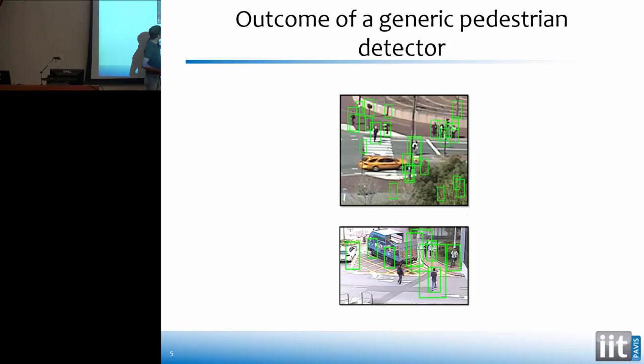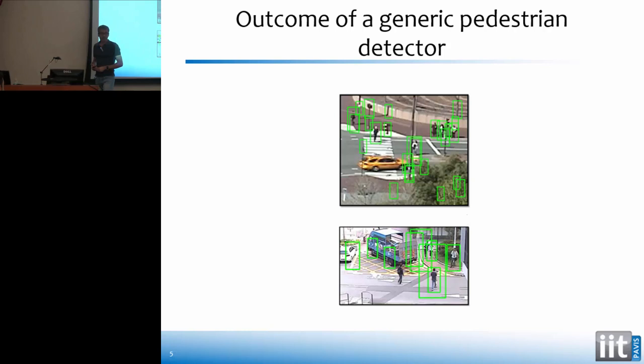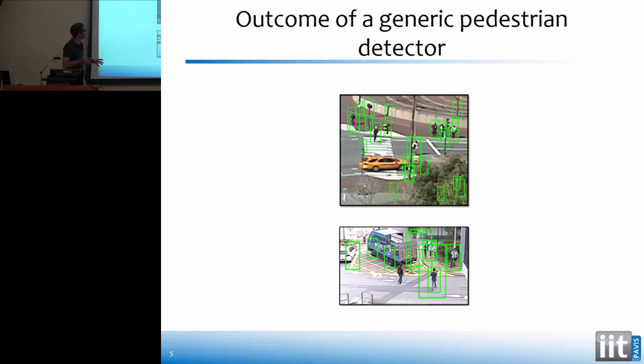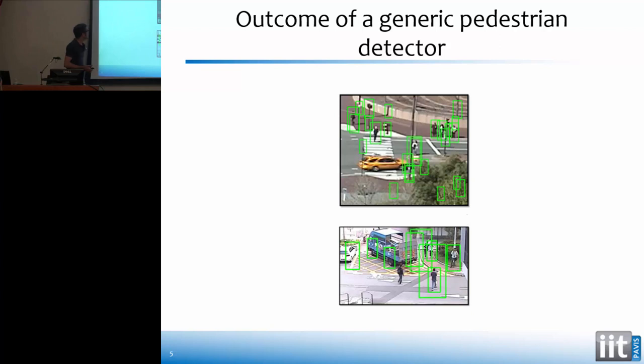This is what happens — as you can see, there are a lot of false positives. The generic detector here is the Dalal and Triggs HOG plus SVM detector, which is a bit old, but if you use more sophisticated detectors in this scenario you have even worse performance, because the deformable parts detector needs to recognize sub-parts of the human body at sufficiently high resolution. So if you use the deformable parts detector in this scenario, you have even worse performance.